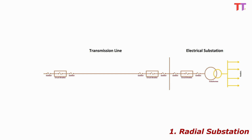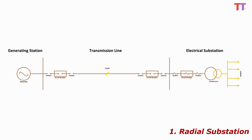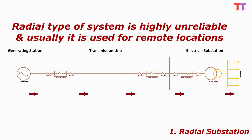However, in the event of source failure or in case of fault on the source line, the complete substation goes dark, subsequently causing complete power breakdown of the connected load. Hence such a system is highly unreliable and usually used for remote locations.